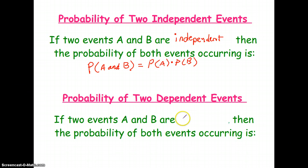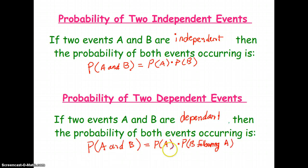If the probabilities are dependent — meaning one event happens and the second event is affected by the first event — then the probability of A and B is the probability of A times the probability of B following A. So we have to find out: once A has happened, what is the probability of B?